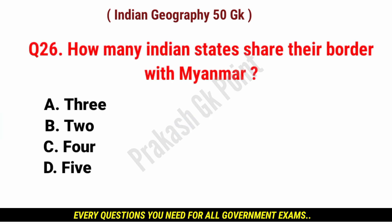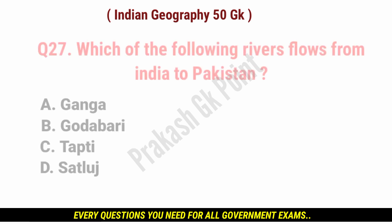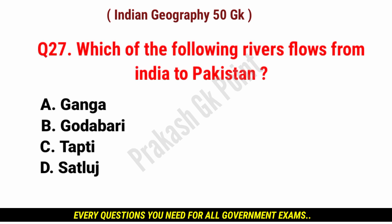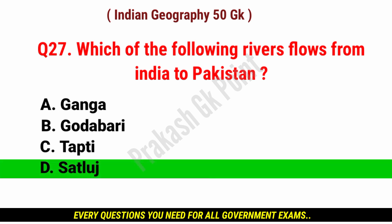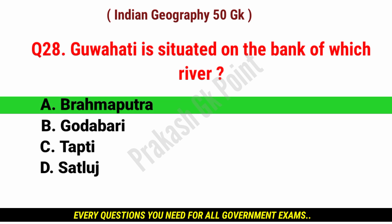How many Indian states share their border with Myanmar? Answer: option C, 4 Indian states. Which of the following rivers flows from India to Pakistan? Answer: option D, Satluj River. Guwahati is situated on the bank of which river? Answer: option A, Brahmaputra River.